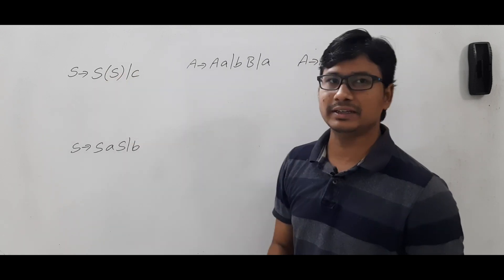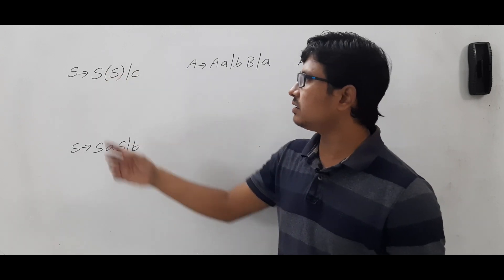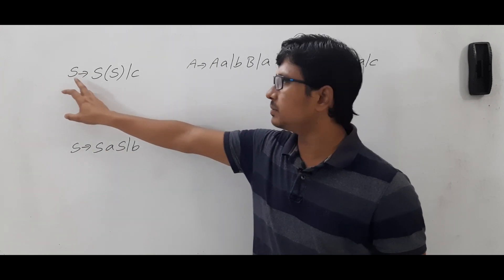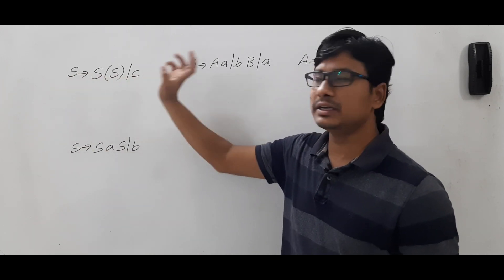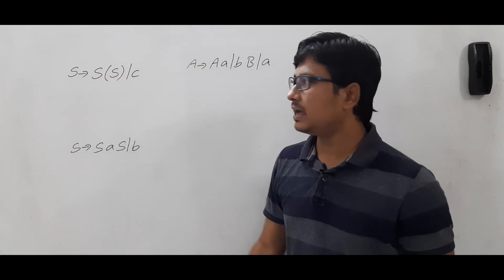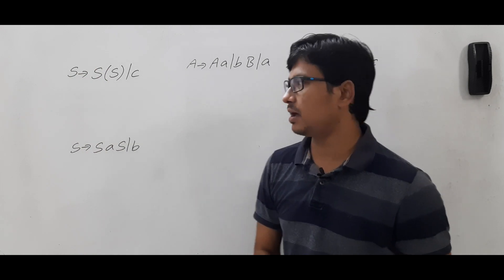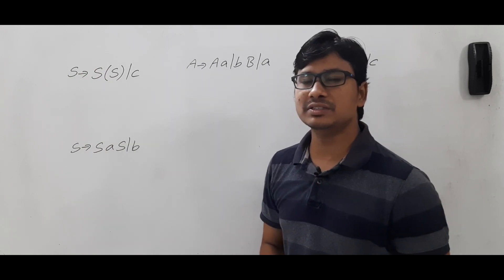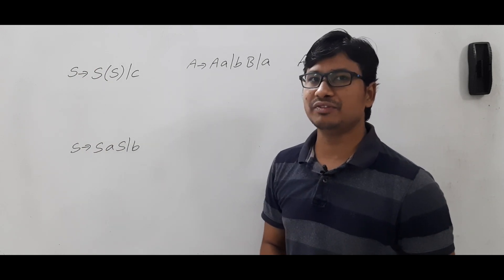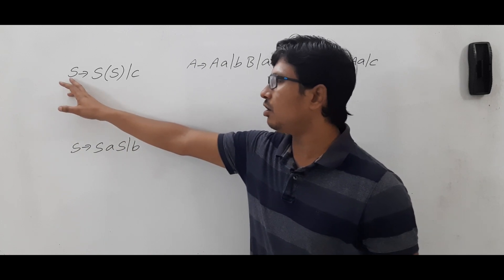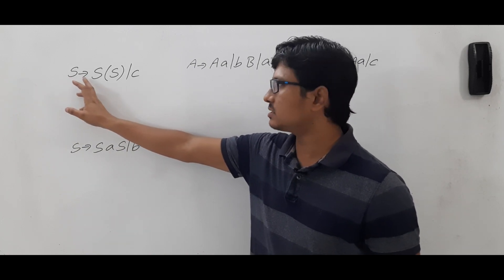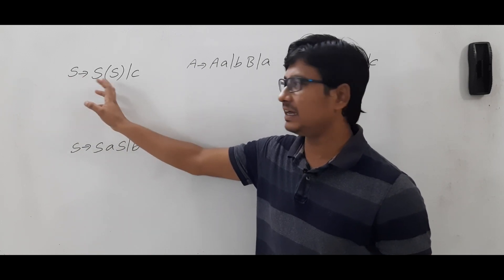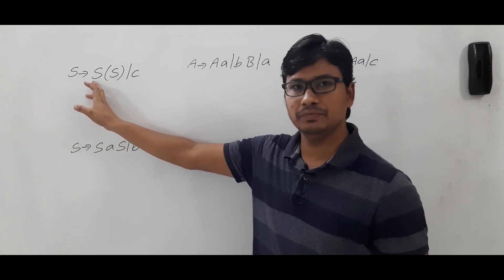First, let's see Example 1: S → S{S} | c. What are the non-terminals here? S is the non-terminal, the terminal is c, and the start symbol is also S. Now first you need to check whether it is a left recursion grammar or not. The non-terminal S is immediately appearing on the right-hand side also.